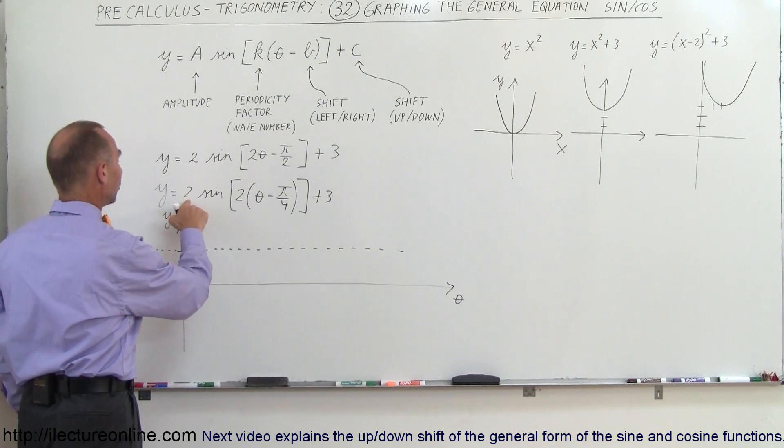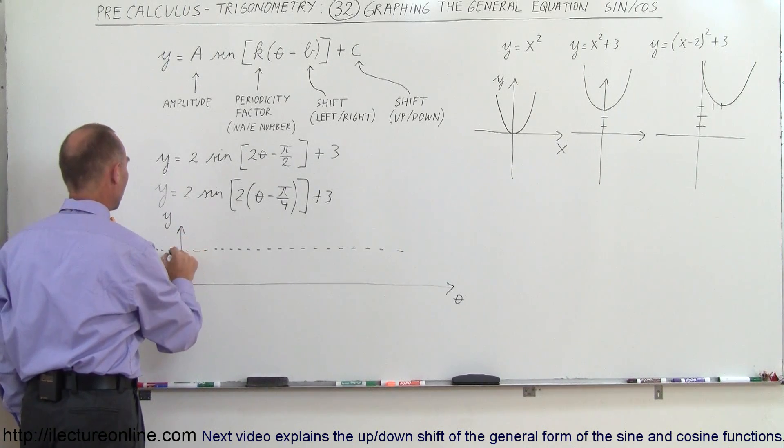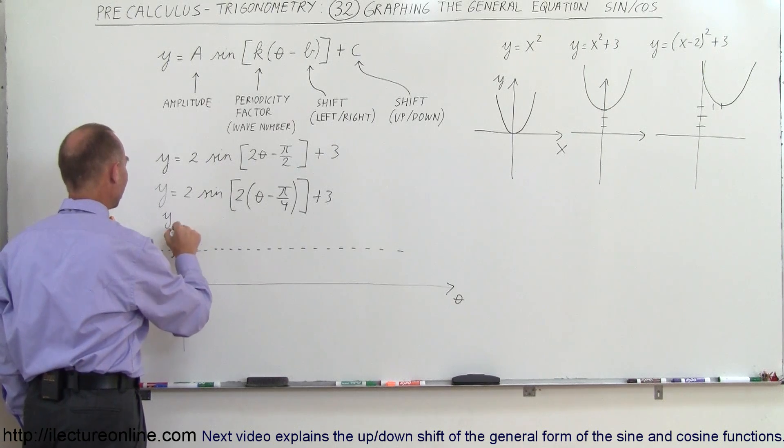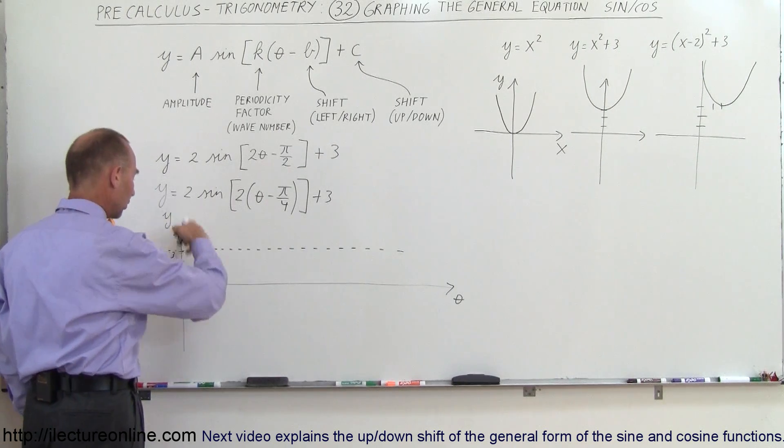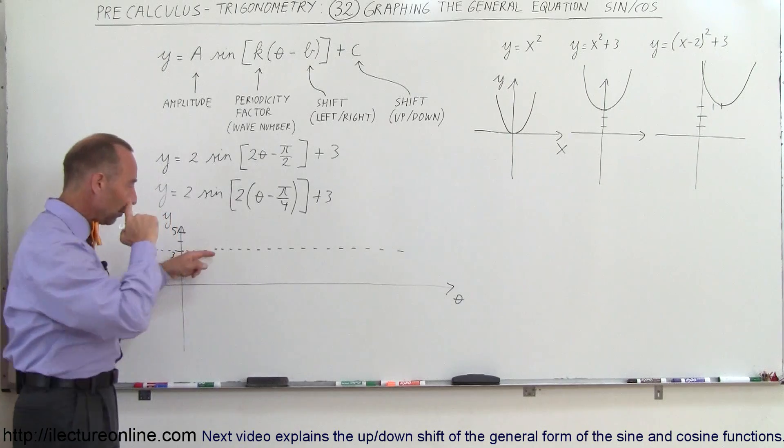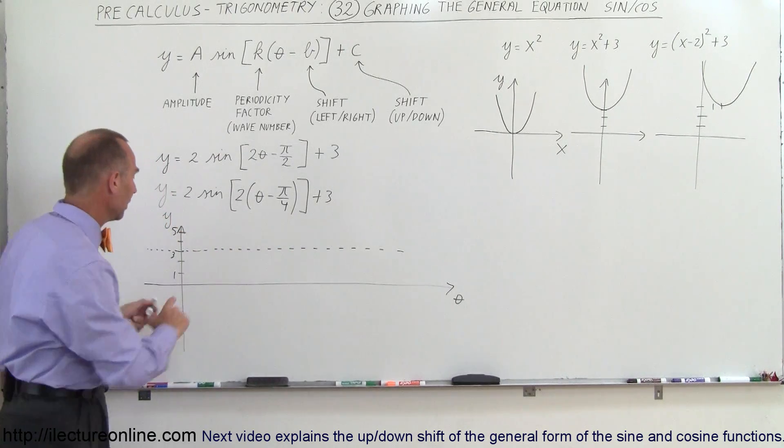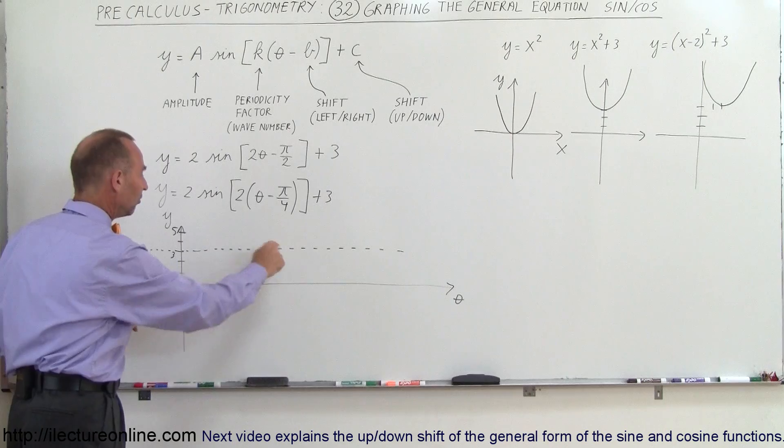Of course then since the amplitude is 2, that means we're going to go from a positive 5 to a positive 1. So we're going to oscillate between 1 and 5 with the equilibrium point at 3 or the middle point at 3. So oscillations will go like this.